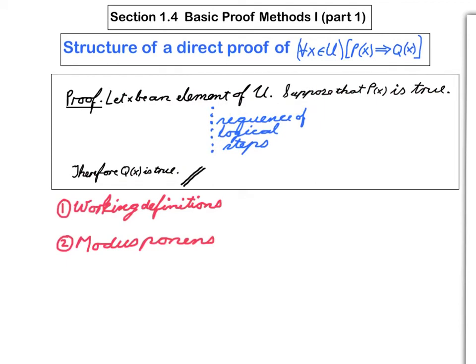So now what comprises this sequence of logical steps? Two things that we can make use of are working definitions and modus ponens. The working definition means for each concept that arises in the proof, we should have a formal definition of what that concept means that we can make use of.